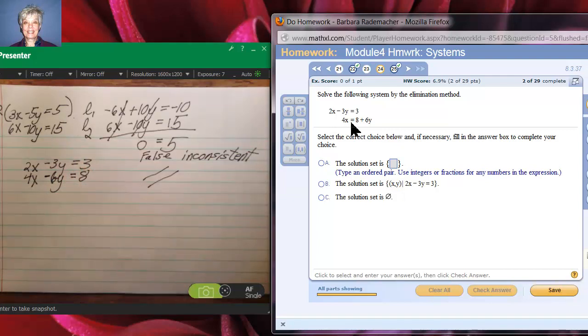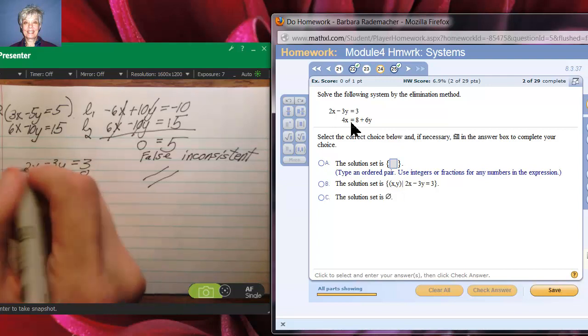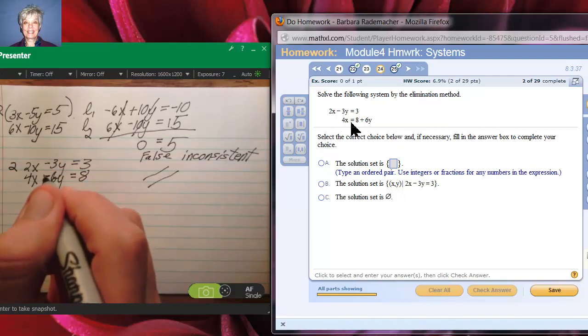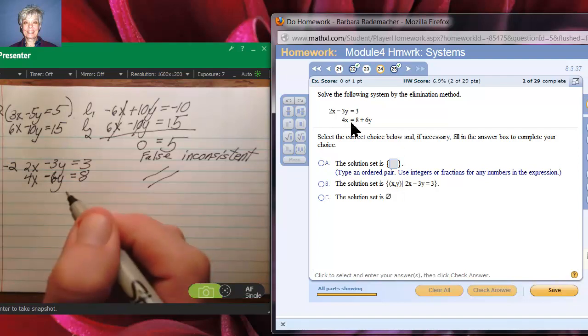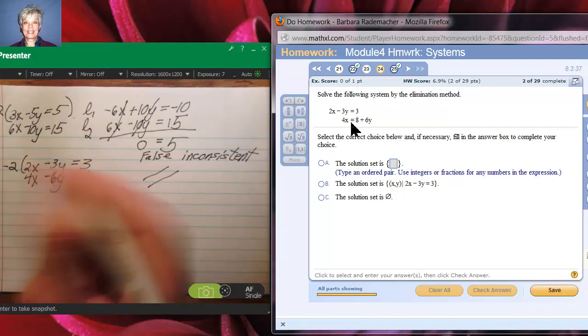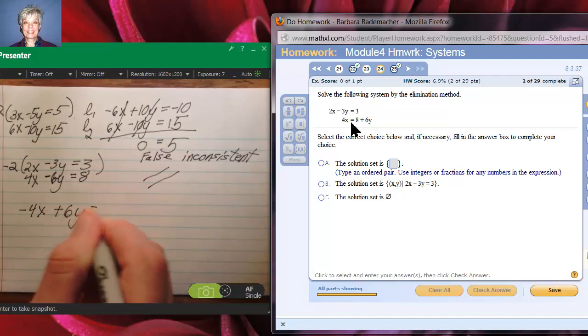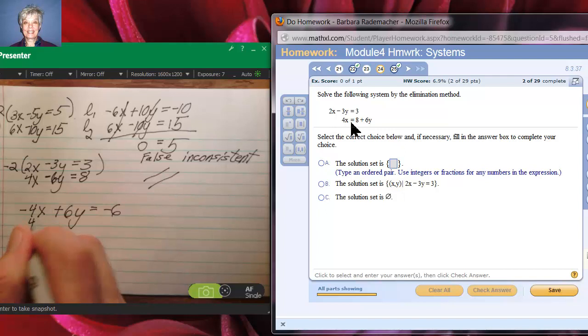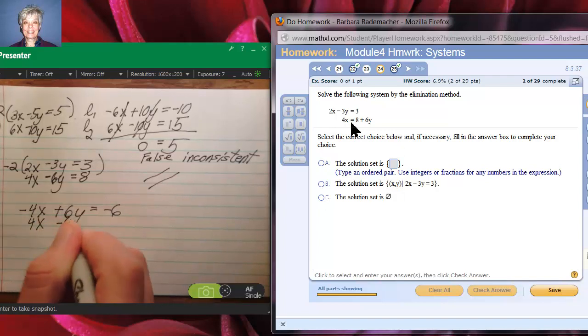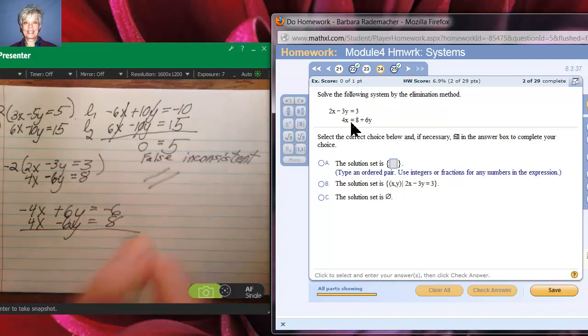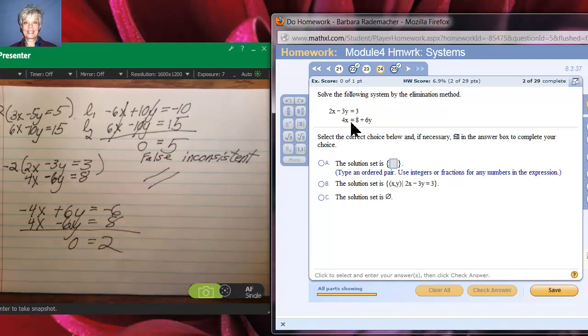Now I've just got to figure out what to do. Well, if I multiply up here by negative 2 again, it looks to me like we're going to have the same thing happen. And we're going to have 4x minus 6y equals 8. It's going to happen again, but this time, look, that's a new symbol for you.